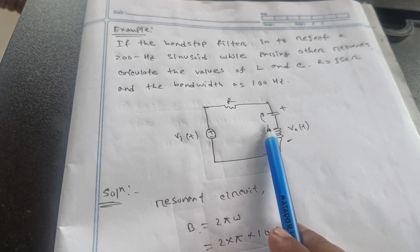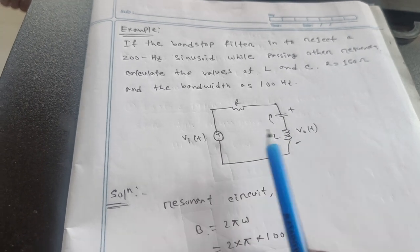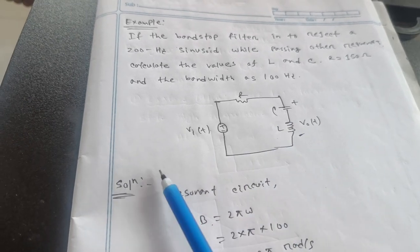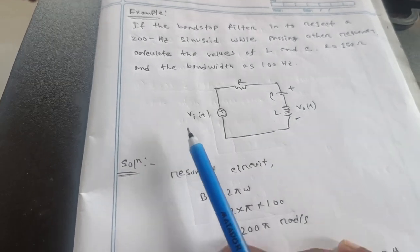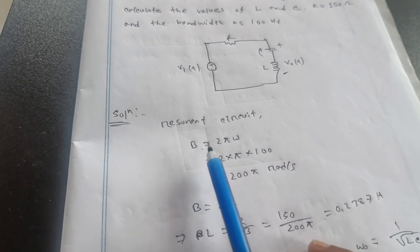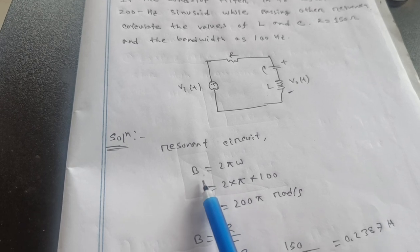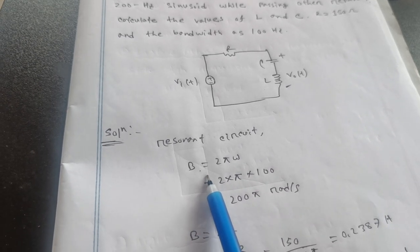R resistor, C capacitor and L inductor. Then plus. Then that means V I equal to what? Resonance B. Circuit resonance value that B. We know B equal to twice pi omega.